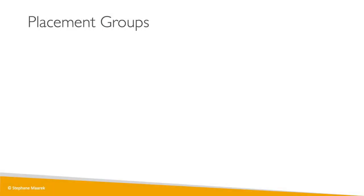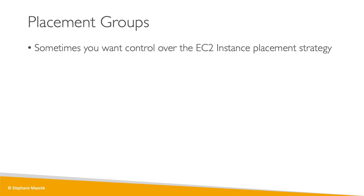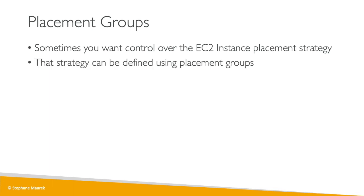Now let's talk about placement groups. Placement groups are a little bit more advanced and we want to use them when we want to have control over how our EC2 instances are going to be placed within the AWS infrastructure. That strategy can be defined using placement groups. We don't get direct interaction with the hardware of AWS but we let AWS know how we would like our EC2 instances to be placed compared to one another.